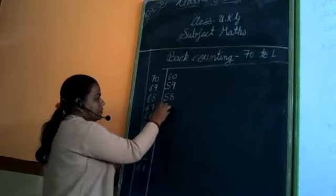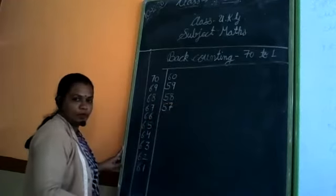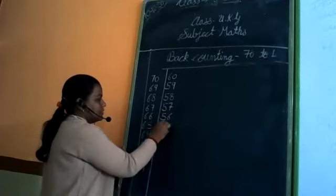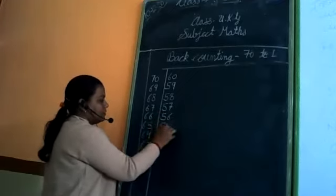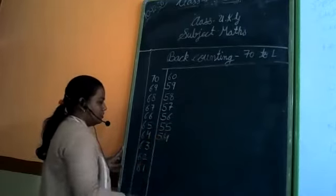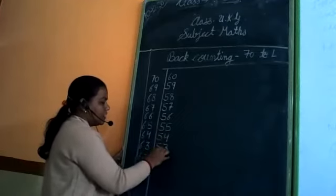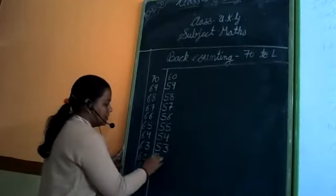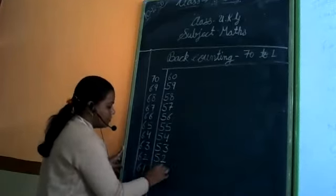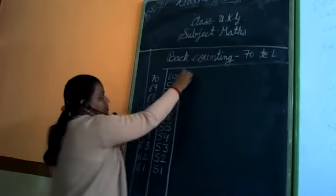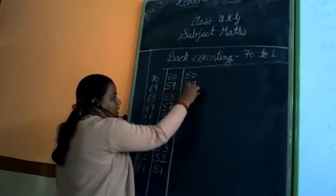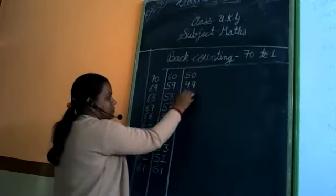60. 59, 59. 58, 58. 57, 57. 56, 56. 55, 55. 54, 54, 54. 53, 53. 52, 52. And 51, 51. 50, 50.